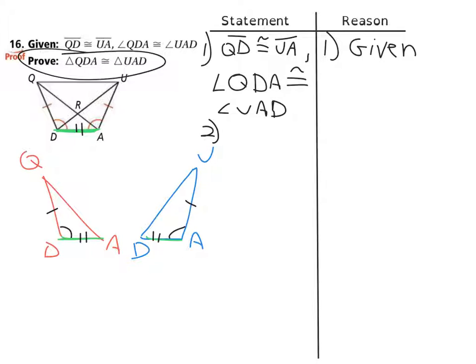side DA is congruent to - and I'm going to reverse the order of the vertices because if we were to flip the second triangle onto the first one, we would see that the vertices switch. So if we were lining up the vertices, we would say side DA is congruent to side AD. How do we know? By the reflexive